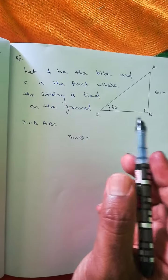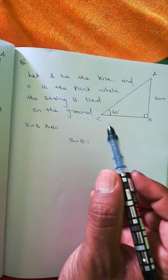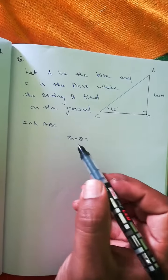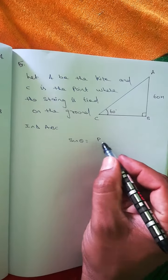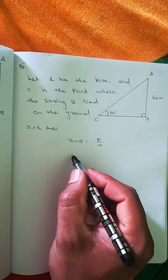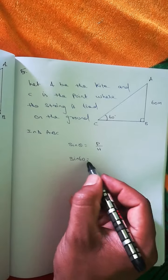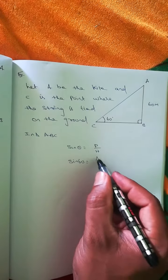Let A be the kite and C is the point where the string is tight on the ground. In triangle ABC, sine theta equals perpendicular by hypotenuse. So take here sine 60 degrees equals perpendicular AB by hypotenuse AC.